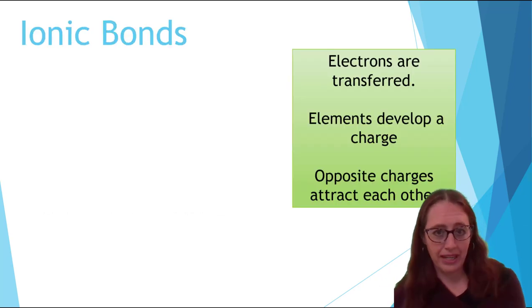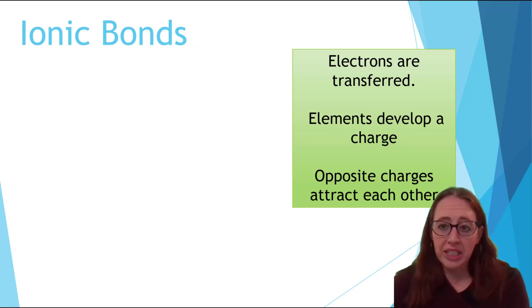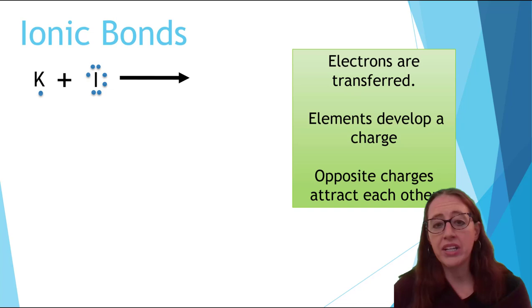Let's look at an example of ionic bonding. We will look at the formation of potassium iodide. Potassium has one electron in its valence shell, or its outside shell. If we were to remove that one, it would have a full octet in the lower shell.